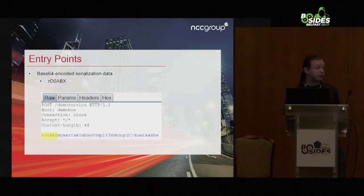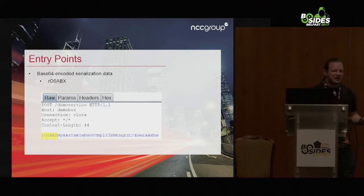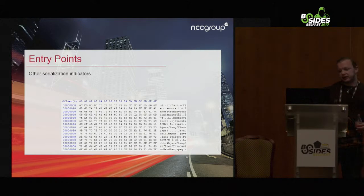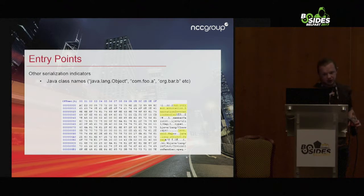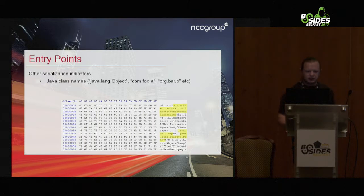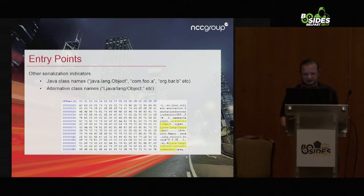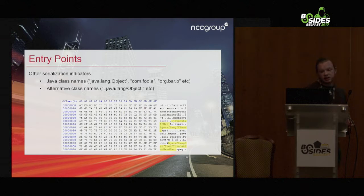For encoded serialization data — in a web application working with a text-based protocol, binary data isn't compatible, so data is often Base64-encoded, which produces a recognizable pattern. If you see a cookie or HTTP header starting with lowercase 'r', capital 'O', zero, and then capital 'ABX', that's the serialization header. When looking at Java serialized data, there are other indicators: Java class names such as sun.reflect.annotation.AnnotationInvocationHandler, com.foo.A, and so on. There's also an alternate format where the class name begins with a capital L, ends with a semicolon, and uses forward slashes instead of dots.